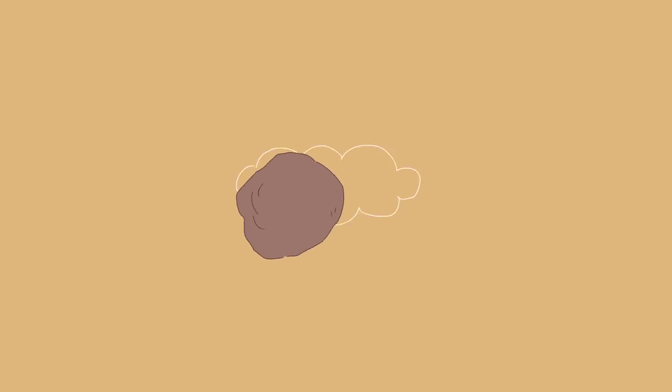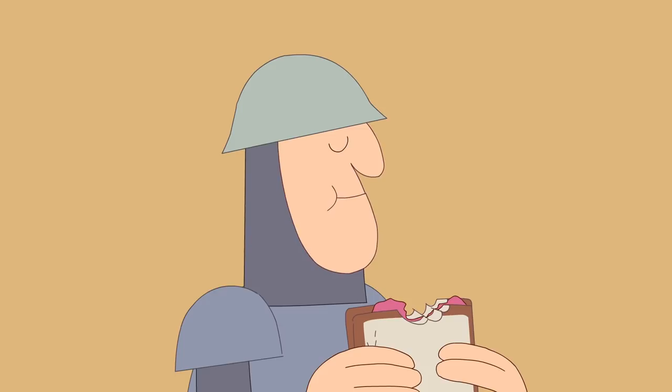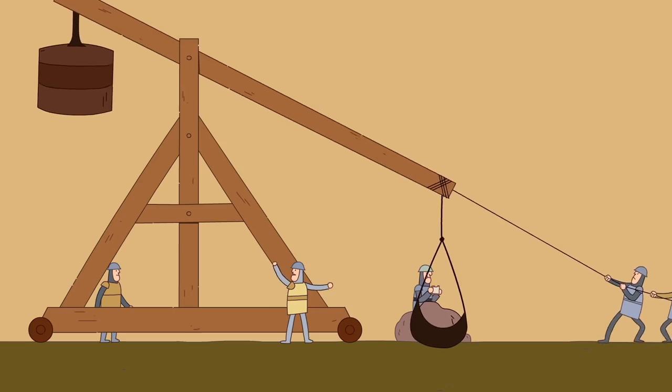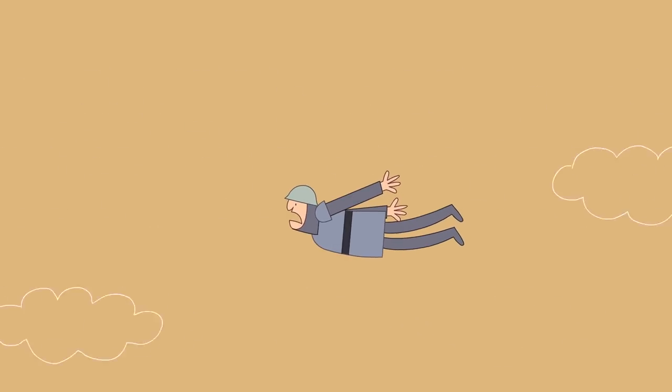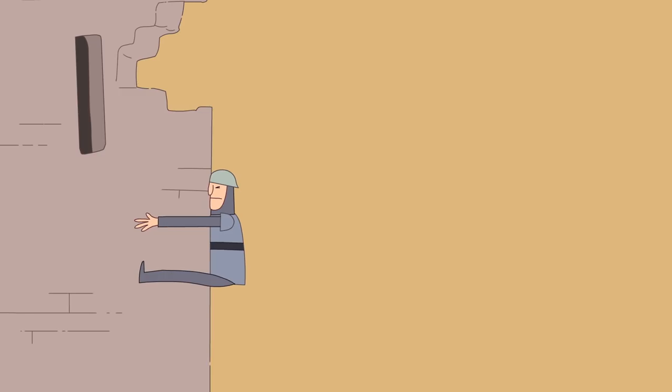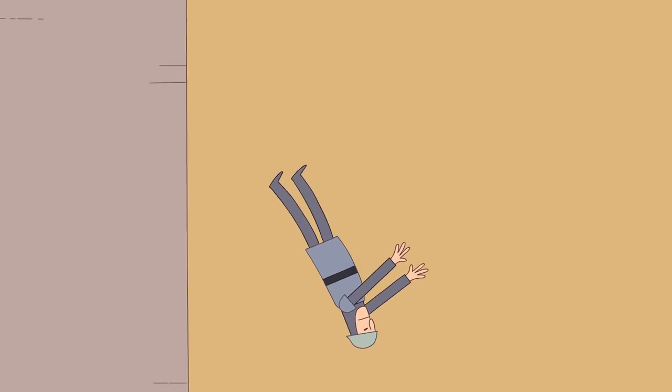Trebuchets were used to deadly effect during the Siege of Kenilworth Castle in 1266. They could also be used alongside mining. At the Siege of Dover in 1216, Prince Louis of France used both tactics together to assault the castle gateway, allowing his forces to pour through an opening, take the barbican and kill its commander.